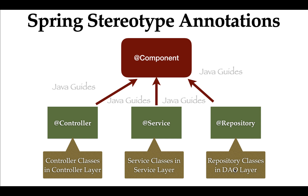In a DAO layer, we can create repository classes and annotate these classes with @Repository so that the Spring container can create Spring beans for these repository classes. Notice in the diagram that @Component is the main stereotype annotation, and @Controller, @Service, and @Repository are derived from it.